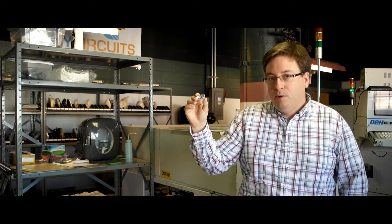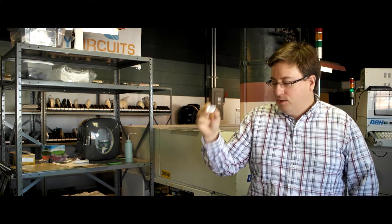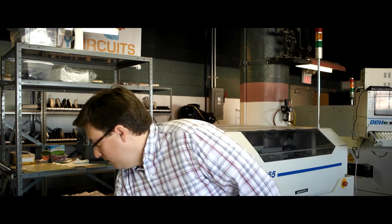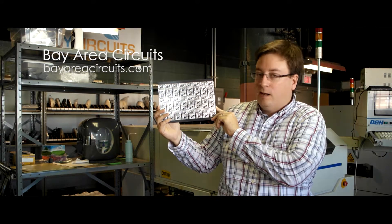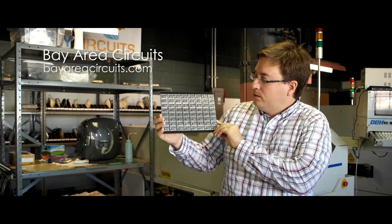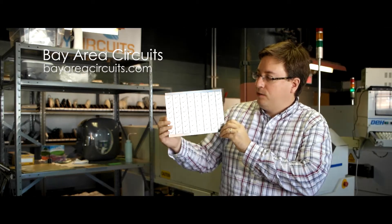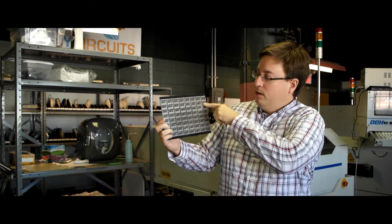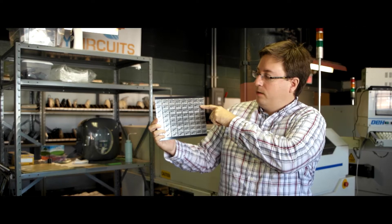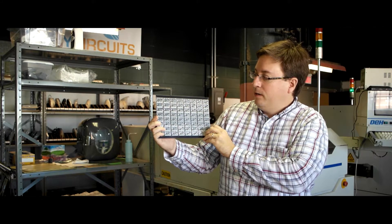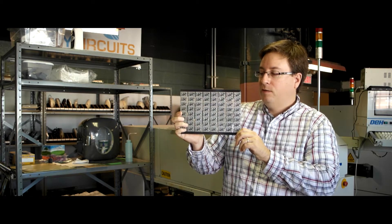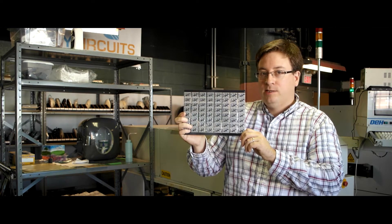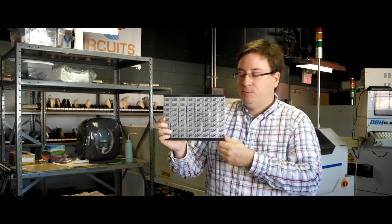We're going to walk through the process of actually manufacturing these boards. The first step is Aaron and DigiStump got these boards made at Bay Area Circuits out of California. This is a panel of all the DigiSpark Pro. There are 64 boards on here. You can see their 8x8 matrix. The boards are all scored between them so we can easily break them after the fact. The first step of the process is we're going to put this into a solder paste printer.